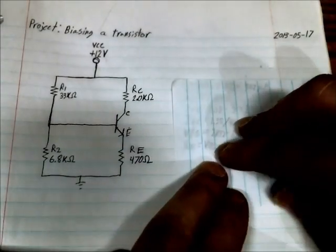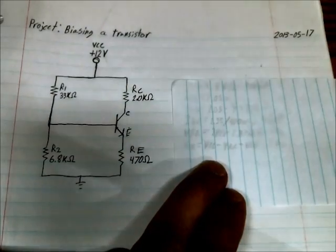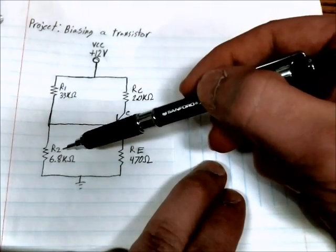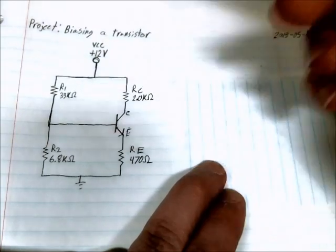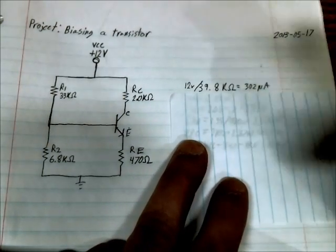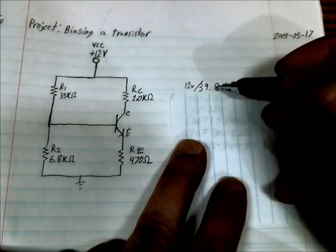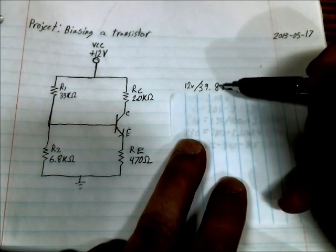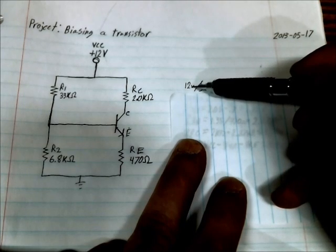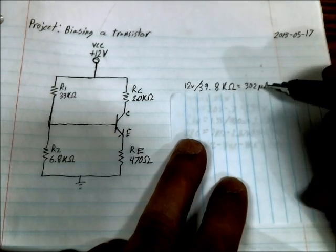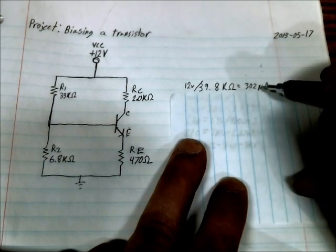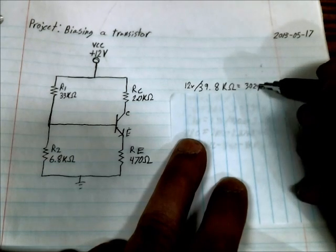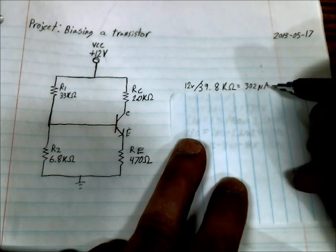So the first thing you want to do is calculate the current running through R1 and R2. So you add R1 and R2 together and that is equal to 39.8 kiloohms. And you take that value and divide VCC which is 12 volts and you get the current through those resistors and that current is 302 microamps.